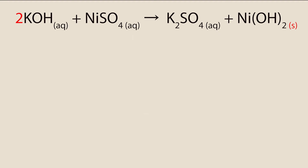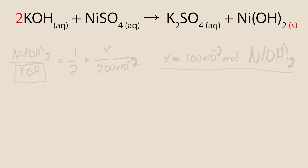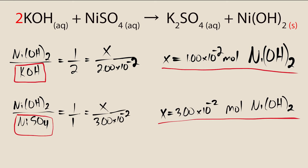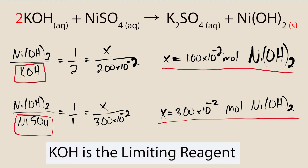Now let's apply that same logic to the problem at hand. We've already calculated the number of moles of each reactant. We then have to use the balanced equation to calculate the amount of product that could theoretically form if each reactant is fully consumed. By comparing the mole ratio of each reactant to the precipitate, we can see that potassium hydroxide is the limiting reagent, as it forms a smaller amount of product.